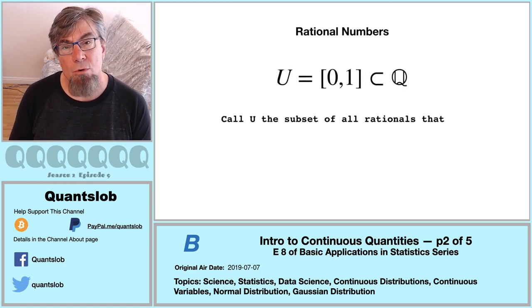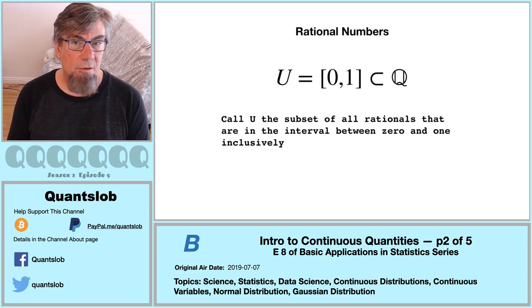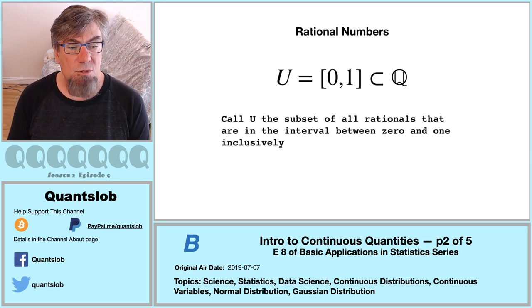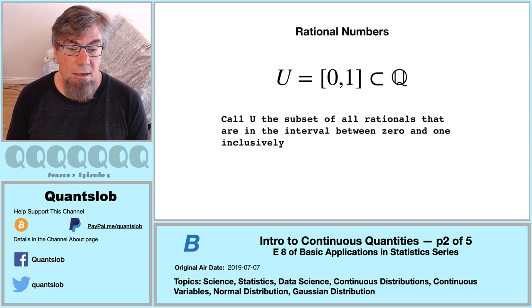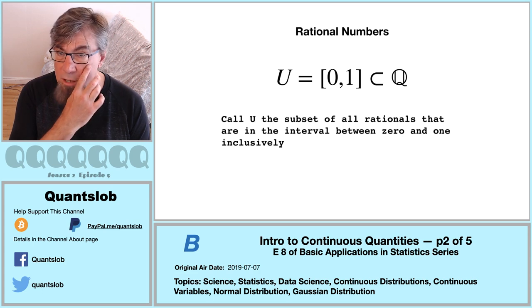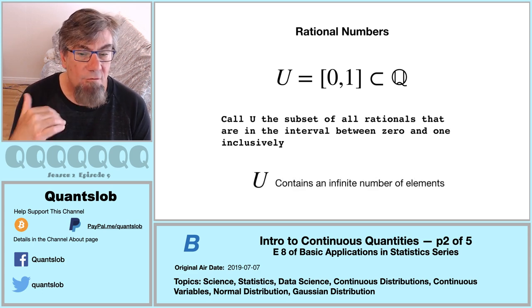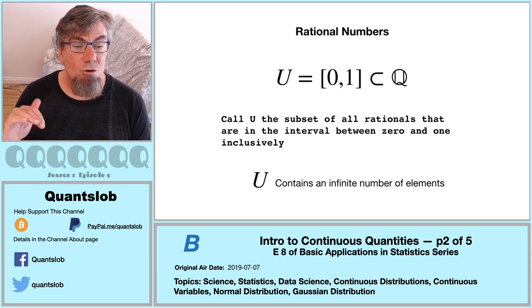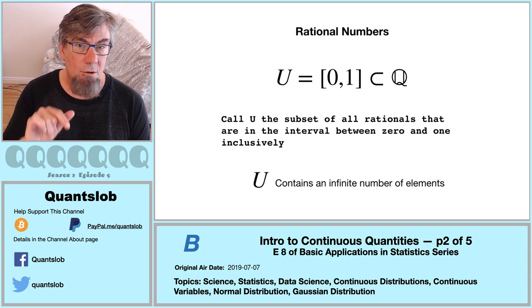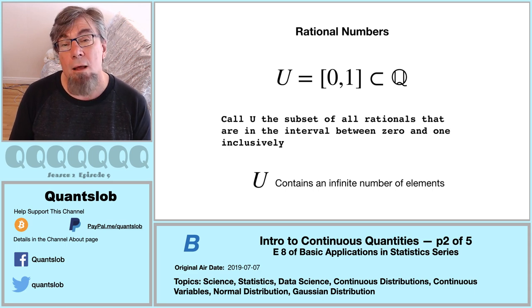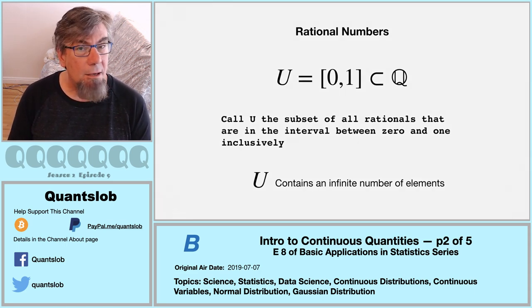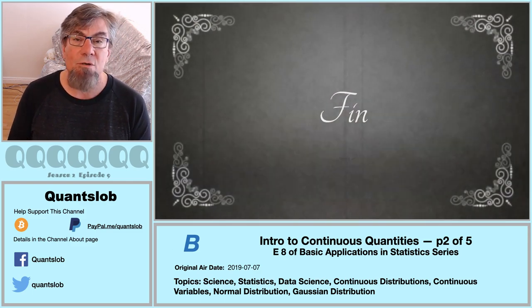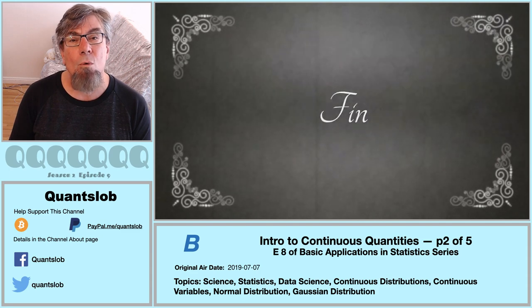The set of rational numbers offers a really fascinating window into infinity. Consider just the subset of rational numbers between zero and one. This subset itself is dense — just like the larger set of all rational numbers — and therefore contains an infinite number of values. To me this is sort of amazing: there are an infinite number of ratios of integers in the unit interval, between zero and one inclusively. If it should please you, it would please me greatly — subscribe to this channel. Make sure to check out part three of this mini-series. Thank you so very much for tuning in, and don't forget to stay tuned for more QuantSlob.